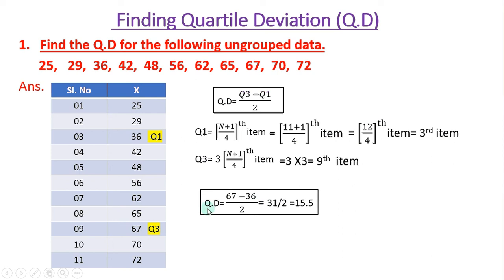We substitute these values into the formula. Quartile deviation equals (67 minus 36) divided by 2, giving 0.5 — wait, that gives 15.5. This is how we calculate quartile deviation for ungrouped data.